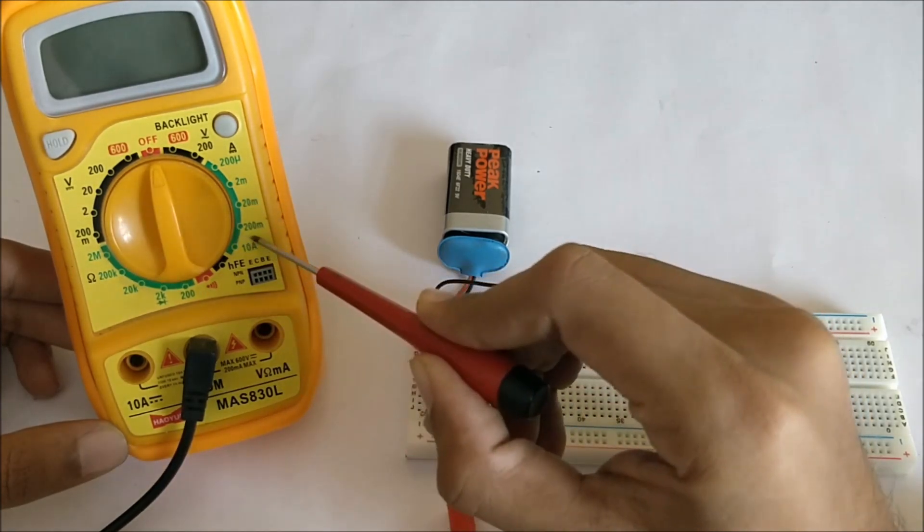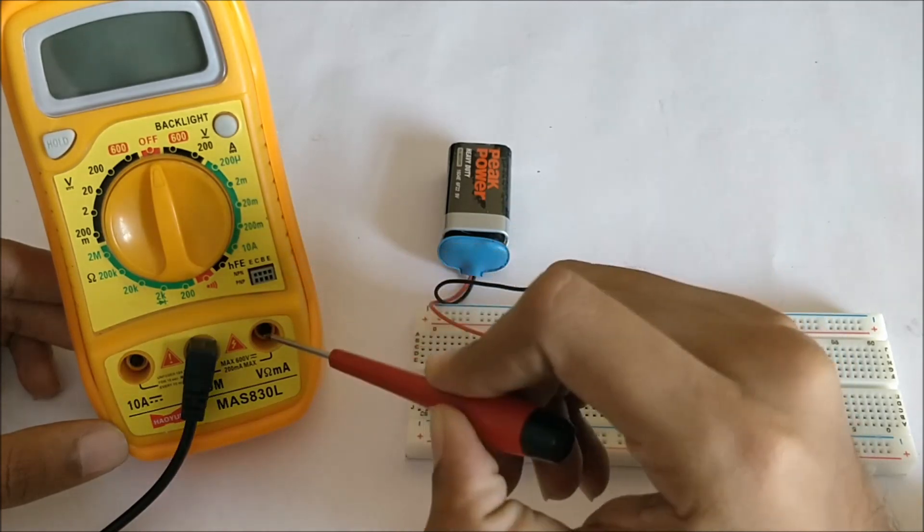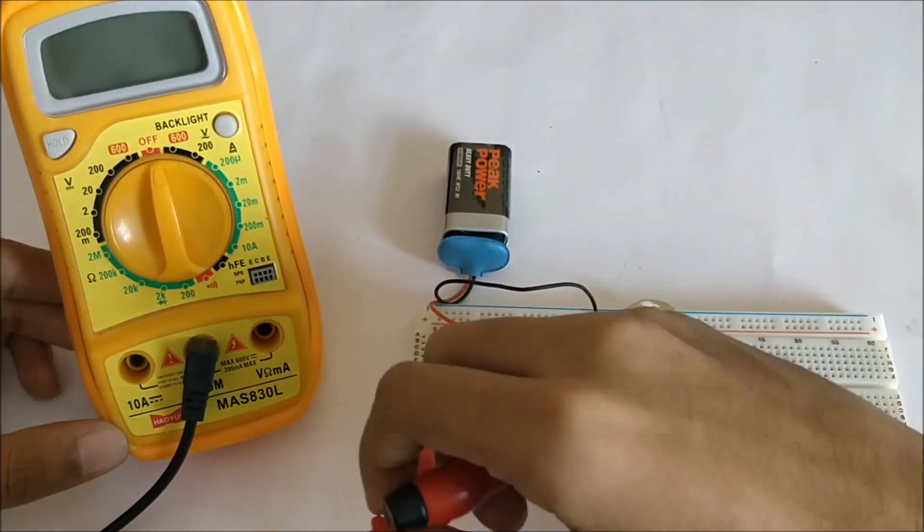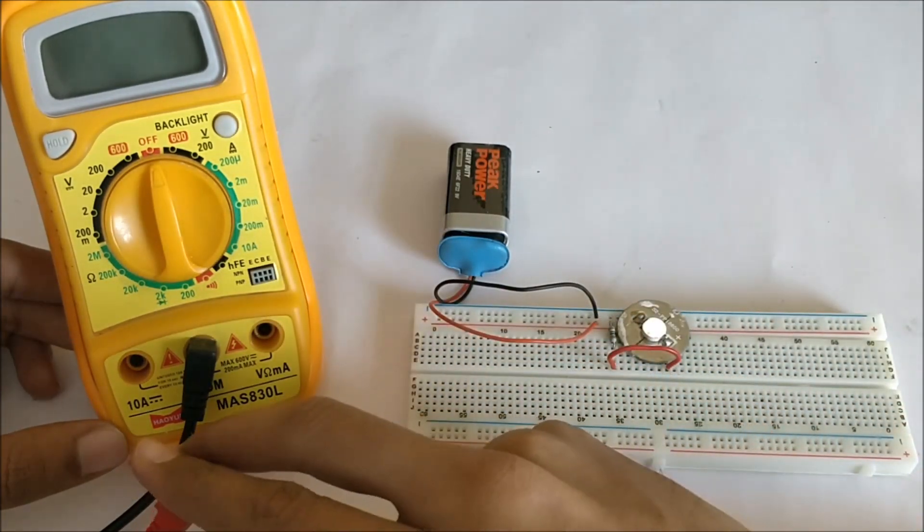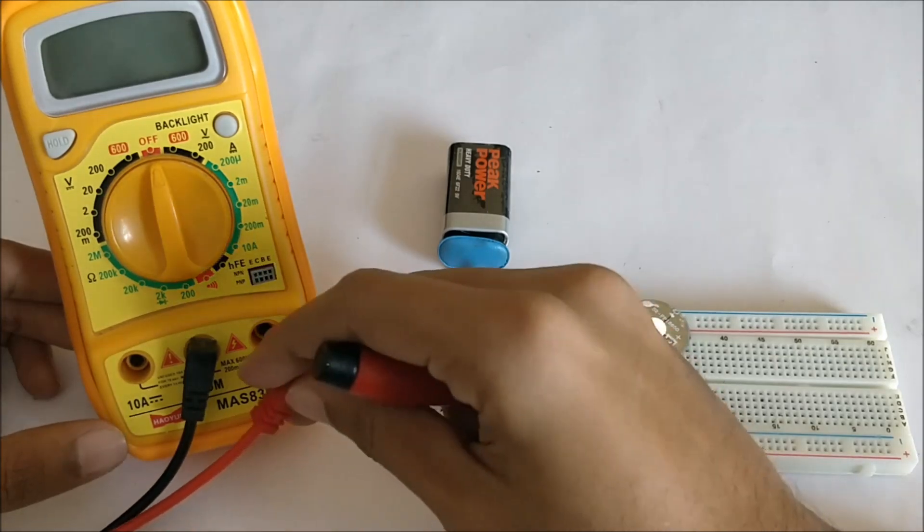So this means from 220 microamps up to 200 milliamps you can use this slot, and for more than 200 milliamps up to 10 amps you can use the other slot.